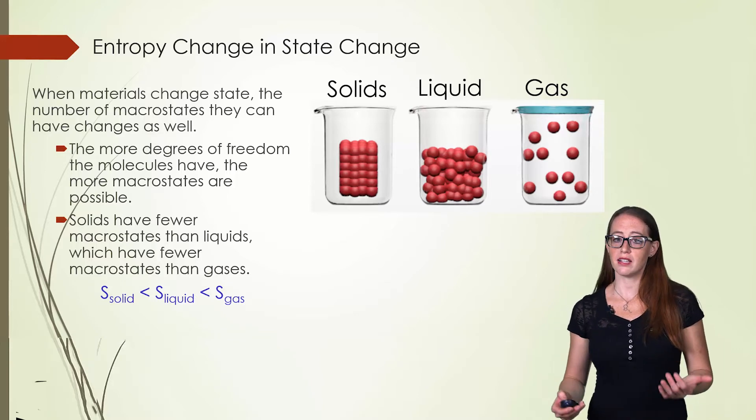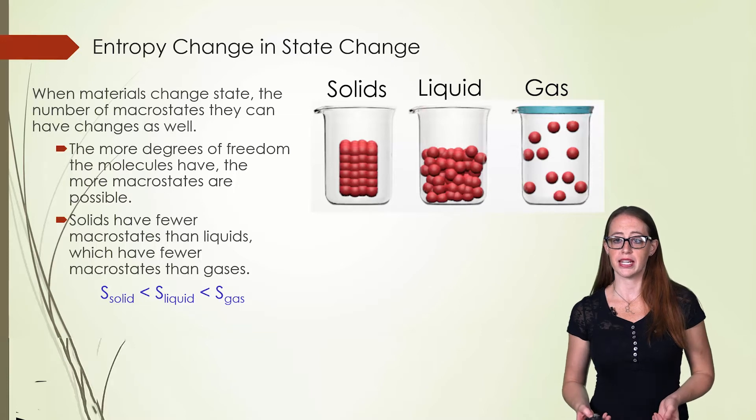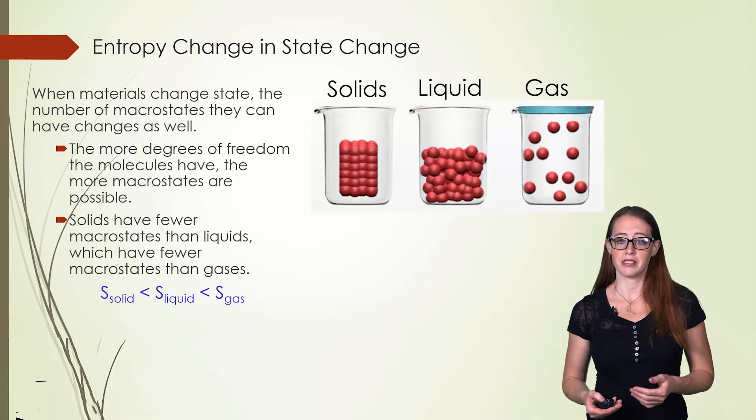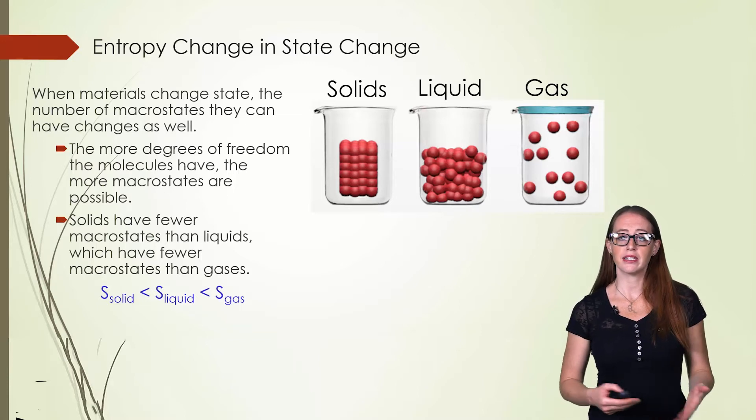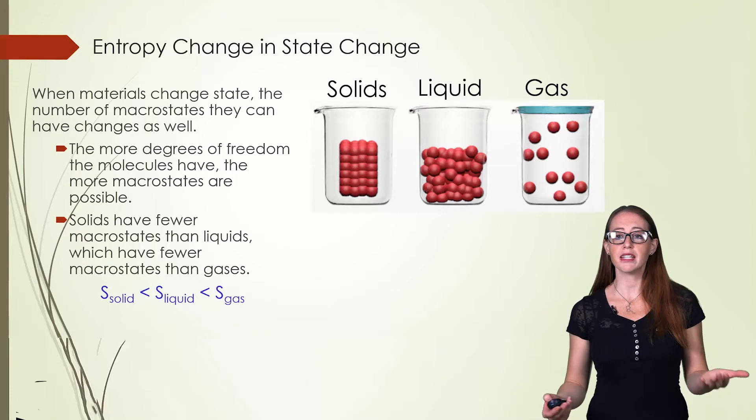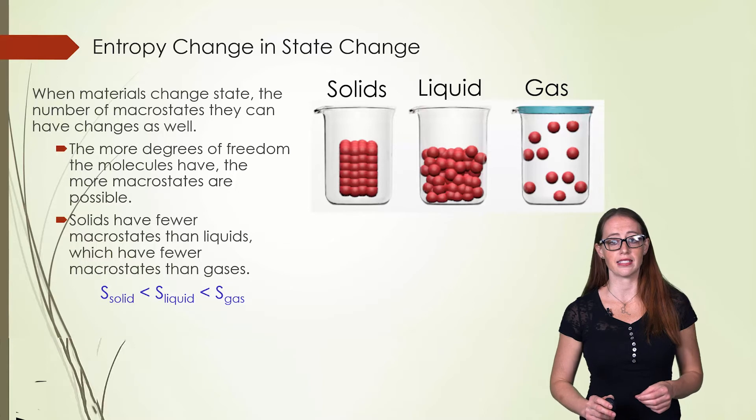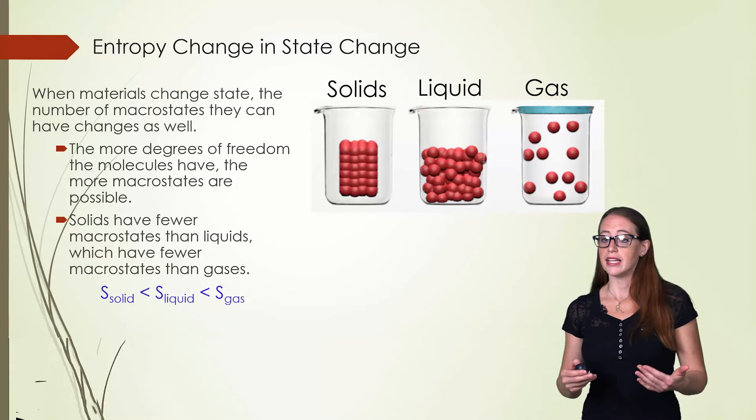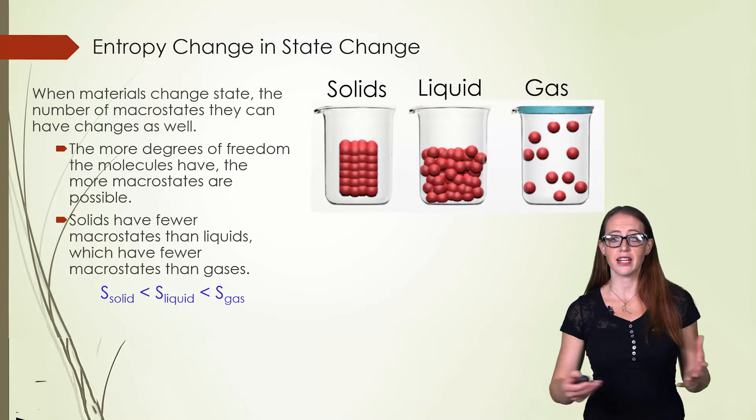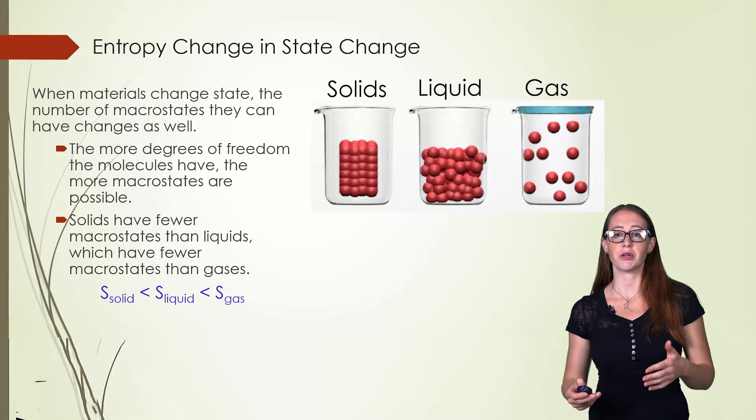We know that solids have a crystal lattice. This is the most ordered state. Molecules are locked in position. In a liquid, the molecules are more random because they can move around each other. However, they are still stuck remaining in contact with each other. Now in a gas, they can fill the entire volume of the container, making it the highest entropy.